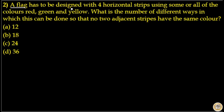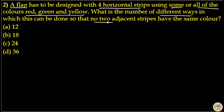A flag has to be designed with four horizontal stripes using some or all of the colors red, green, and yellow. What is the number of different ways in which this can be done so that no two adjacent stripes have the same color?